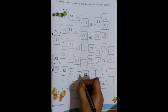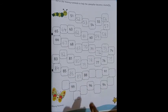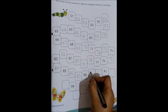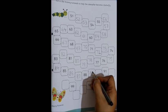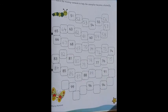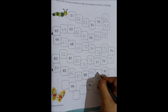87. 88 is there. Then what will come? 89. Then we have 90.